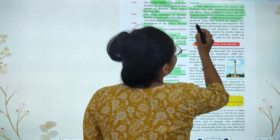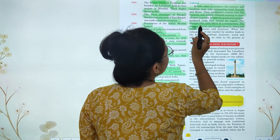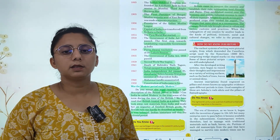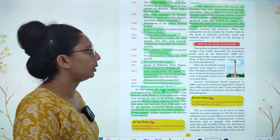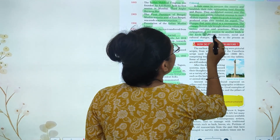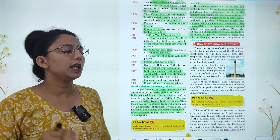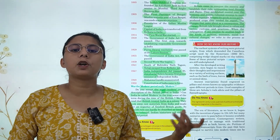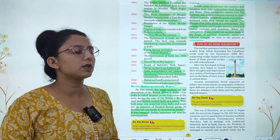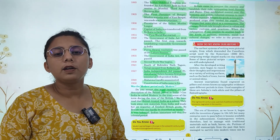The British came to conquer the country and established control over the economic and social life. They collected revenue, promoted crop production for export, and changed the customs and practices of the people. When the subjugation of one country by another leads to political, economic, and social changes, we refer to this process as colonization.